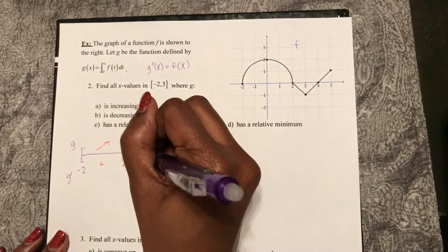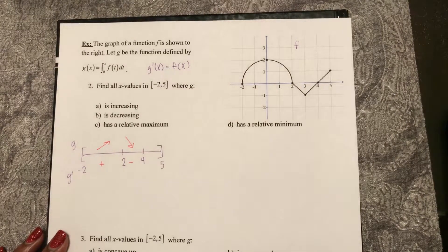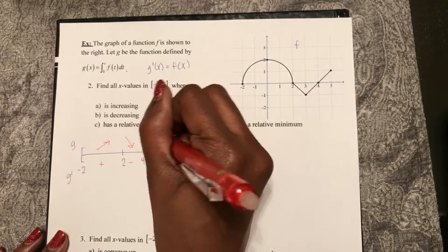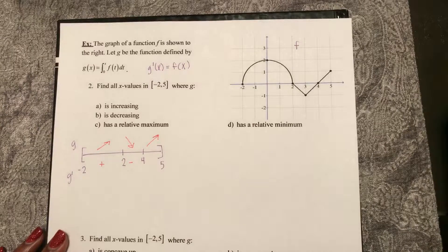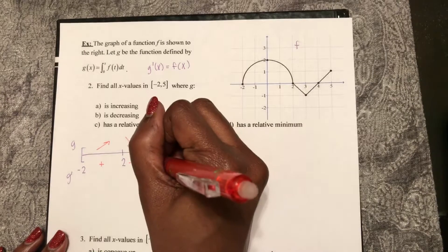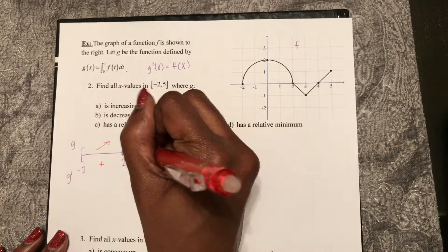And then right here at 4, it goes back to 0, and it increases positive after that.